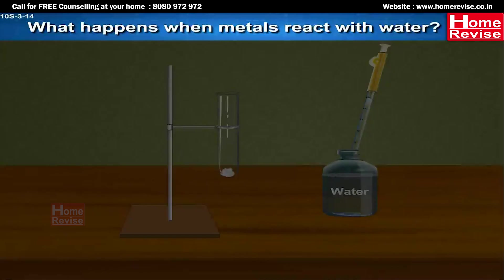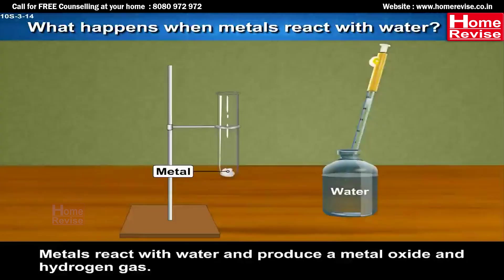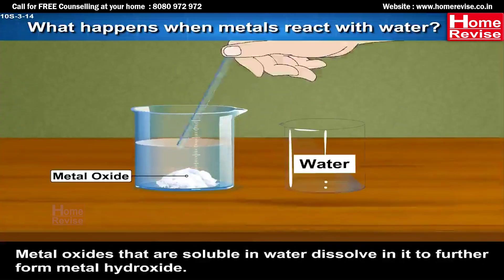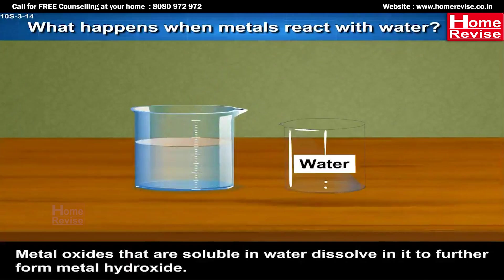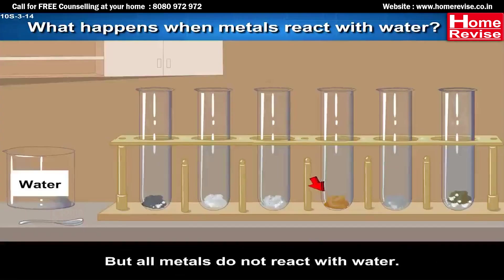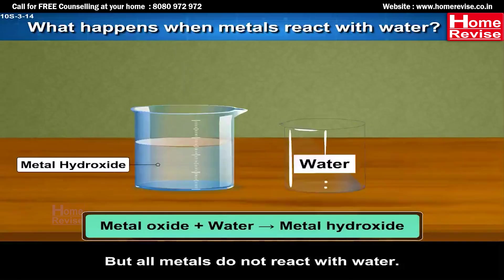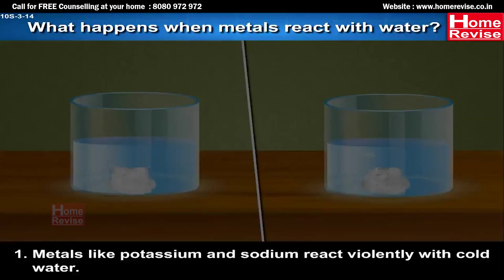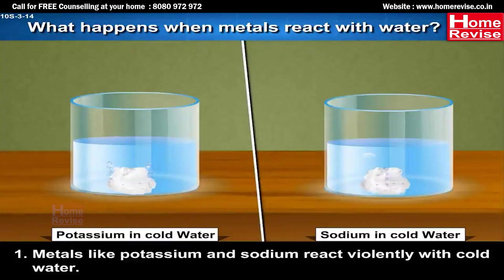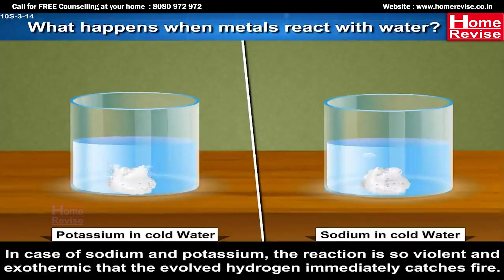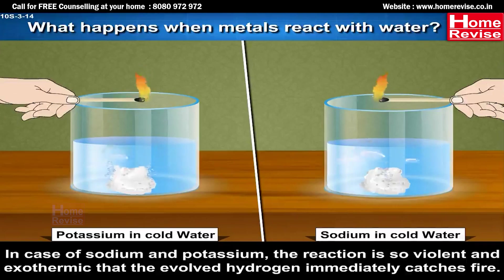What happens when metals react with water? Metals react with water and produce a metal oxide and hydrogen gas. Metal oxides that are soluble in water dissolve further to form metal hydroxide. Metals like potassium and sodium react violently with cold water. In the case of sodium and potassium, the reaction is so violent and exothermic that the evolved hydrogen immediately catches fire.